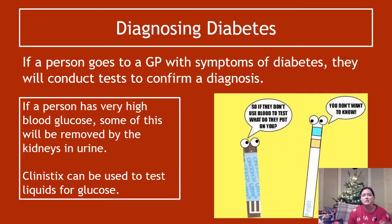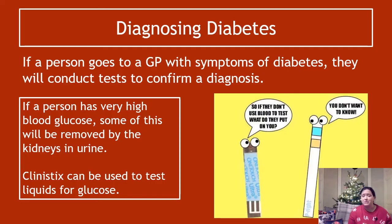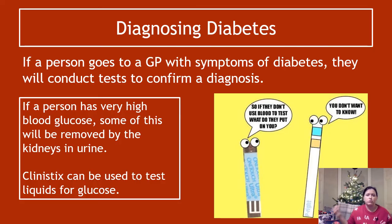Diagnosing diabetes — you need to know some of the steps. If a person goes to a GP with symptoms like peeing a lot, really tired, sudden weight loss, the GP will conduct tests to confirm a diagnosis. Now, if a person has really high blood glucose, some of this will be removed by the kidneys into urine — it's not supposed to happen normally. So one test you can do is clinistix — basically a dipstick you dip in urine, and it tells you if it's got glucose in it or not.